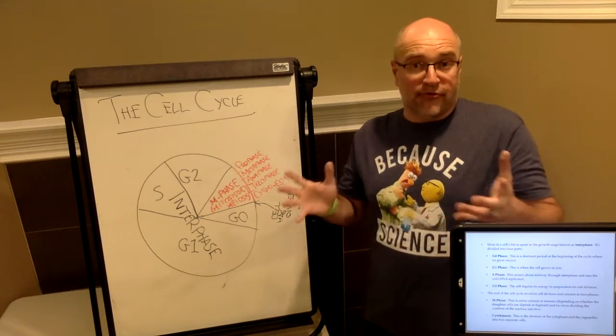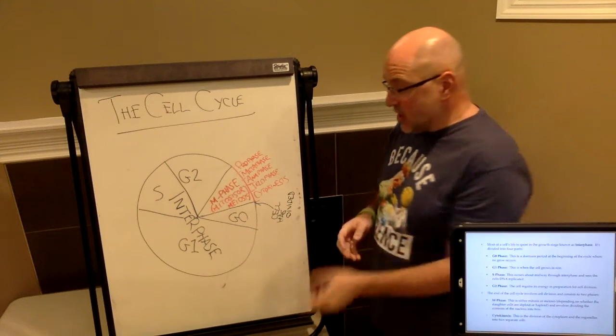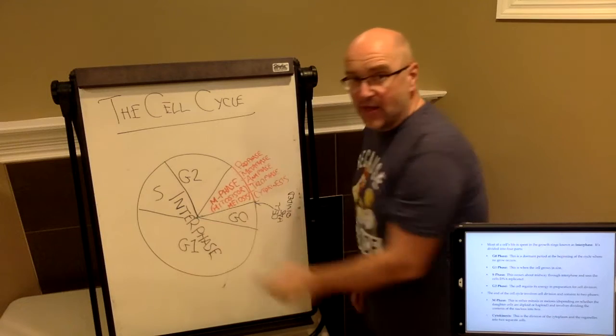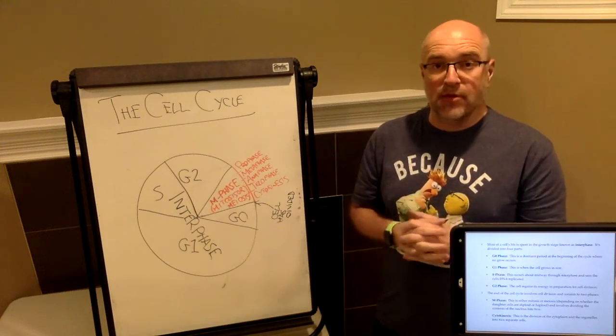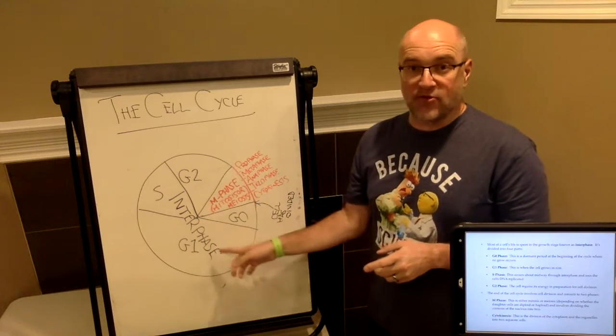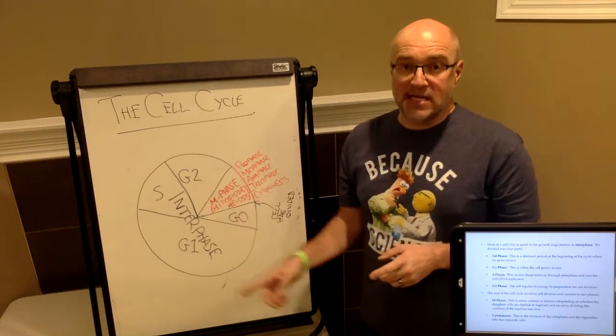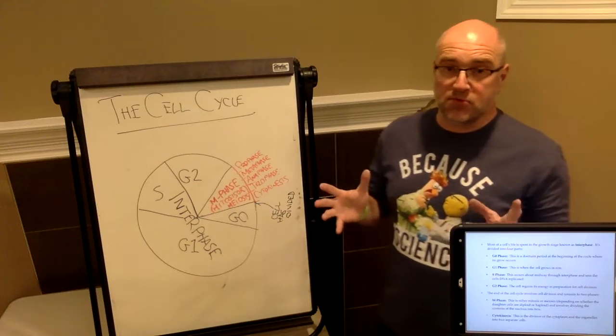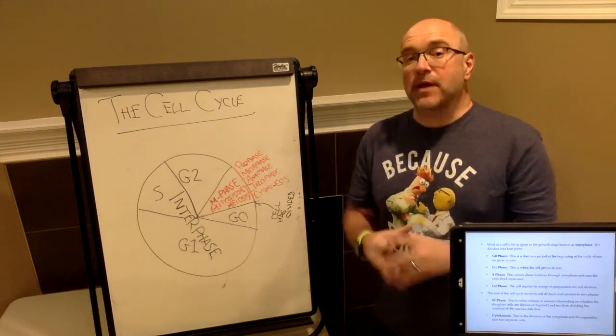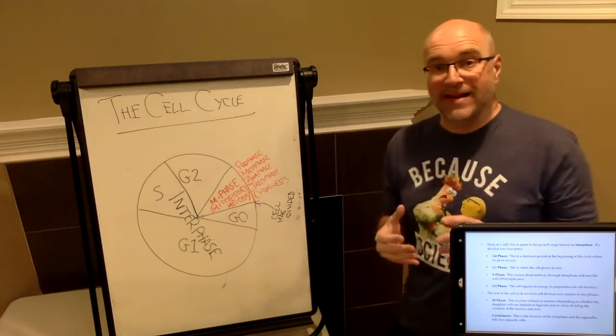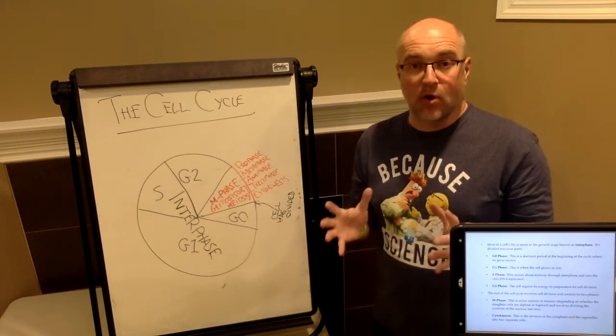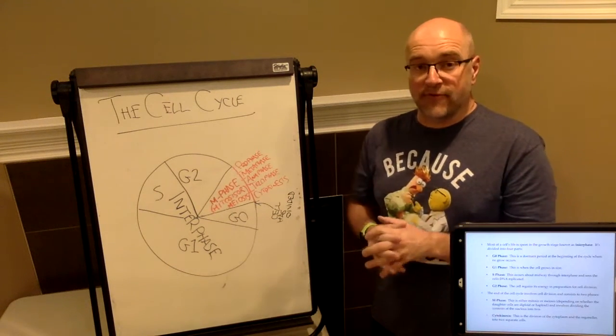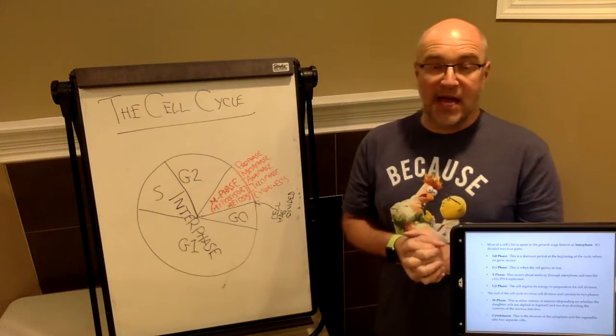So your sister chromatids will begin to form here in S phase, and in a human, for example, we would have initially we would have 46 strands of chromatin in a G1 cell, and if it's a body cell somewhere in the human body, there'd be 46 strands of chromatin. They would then condense into 46 chromosomes, which would then duplicate into a total of 92 sister chromatids that would basically form in preparation for cell division, and that occurs in S phase.